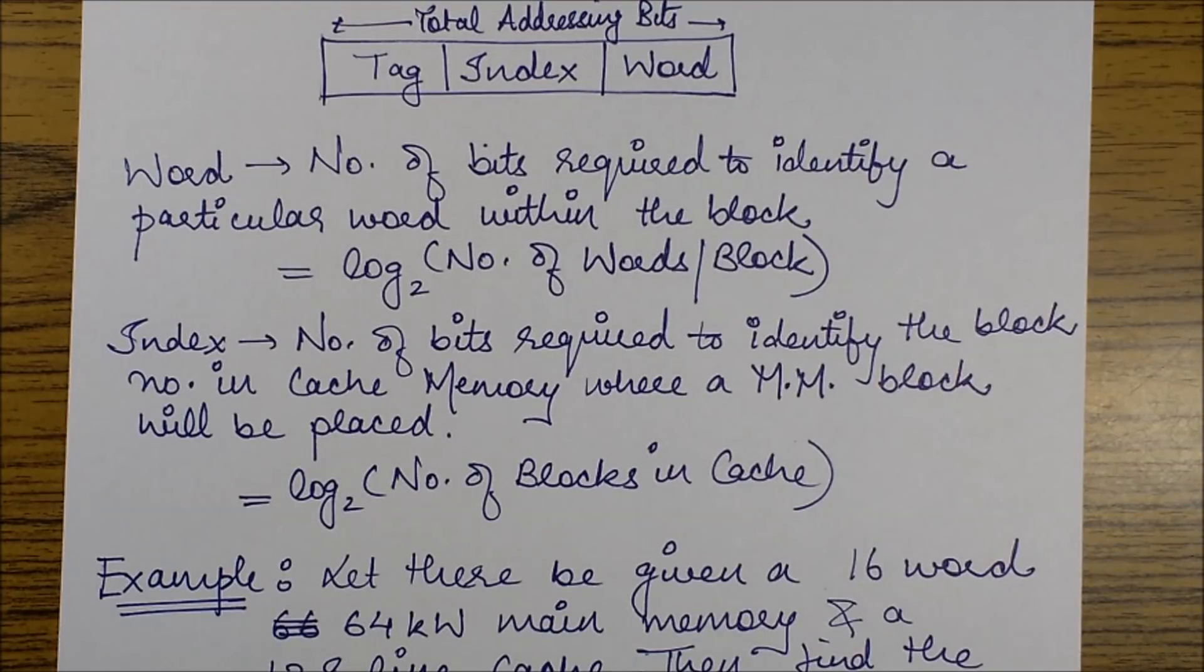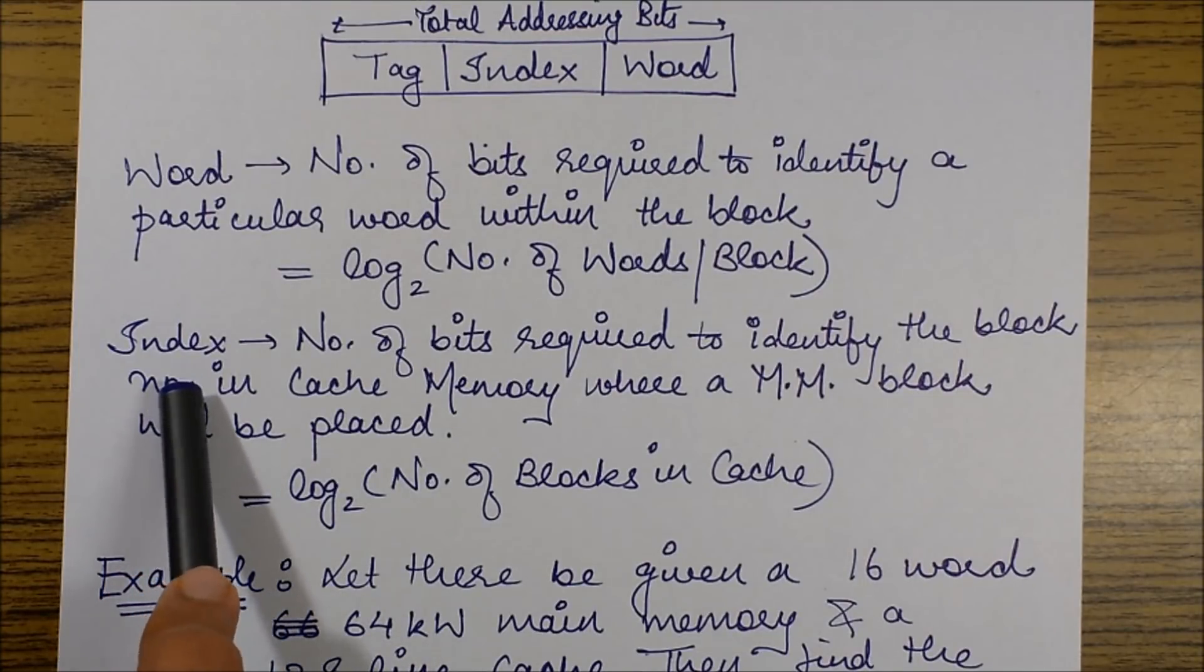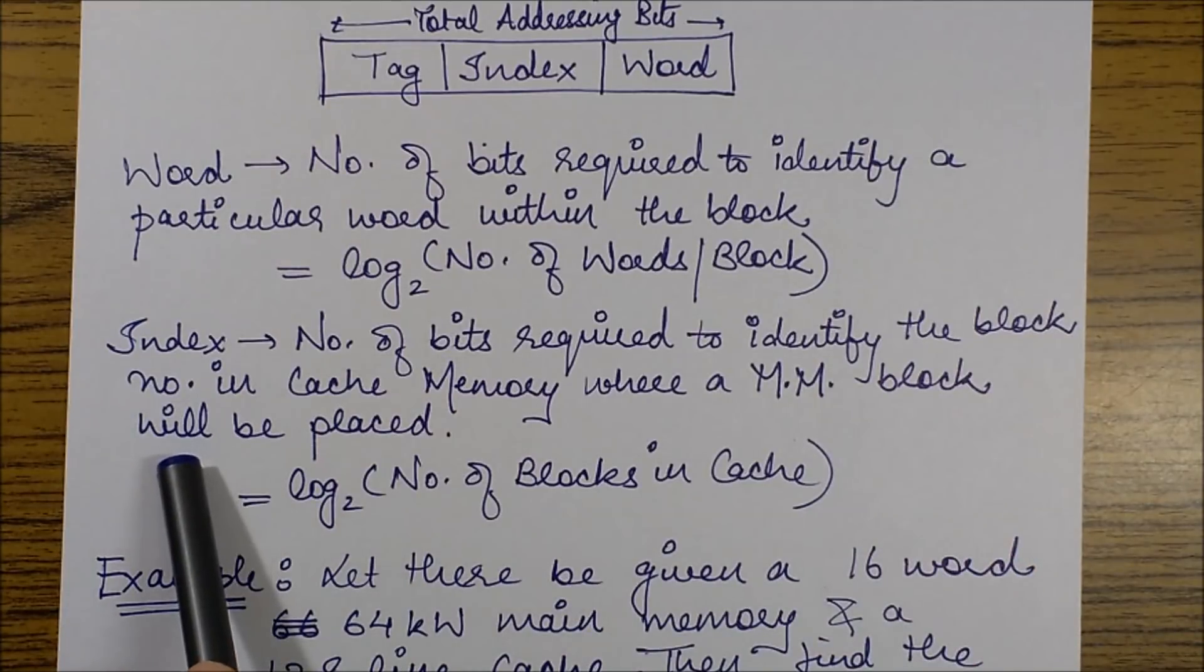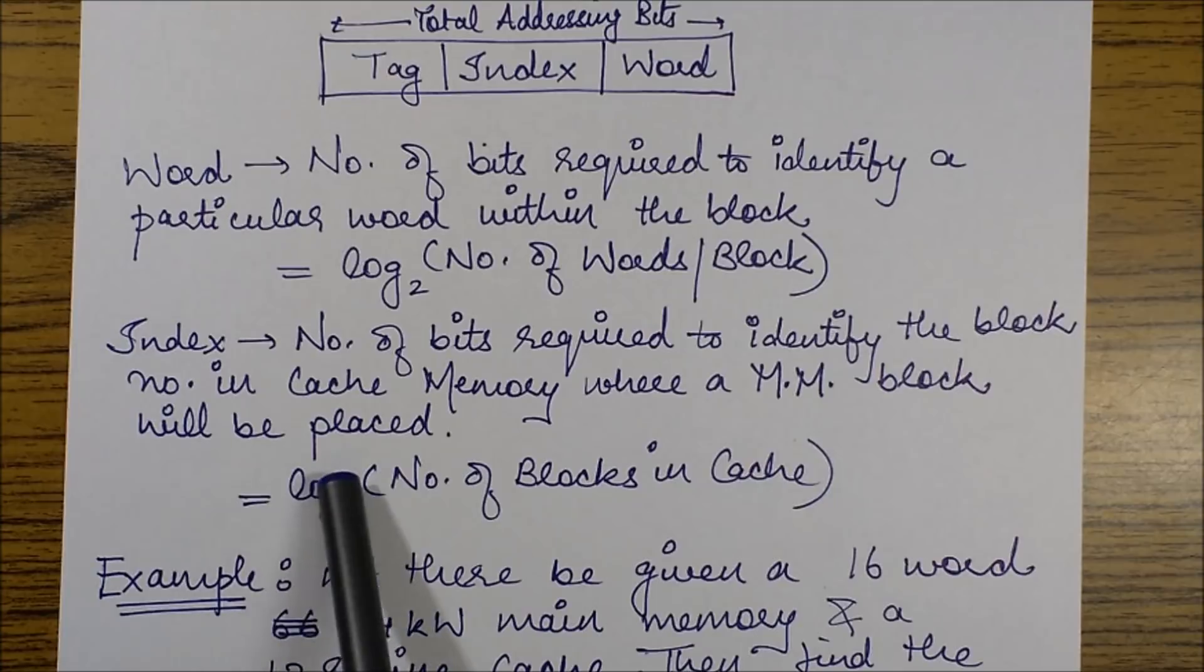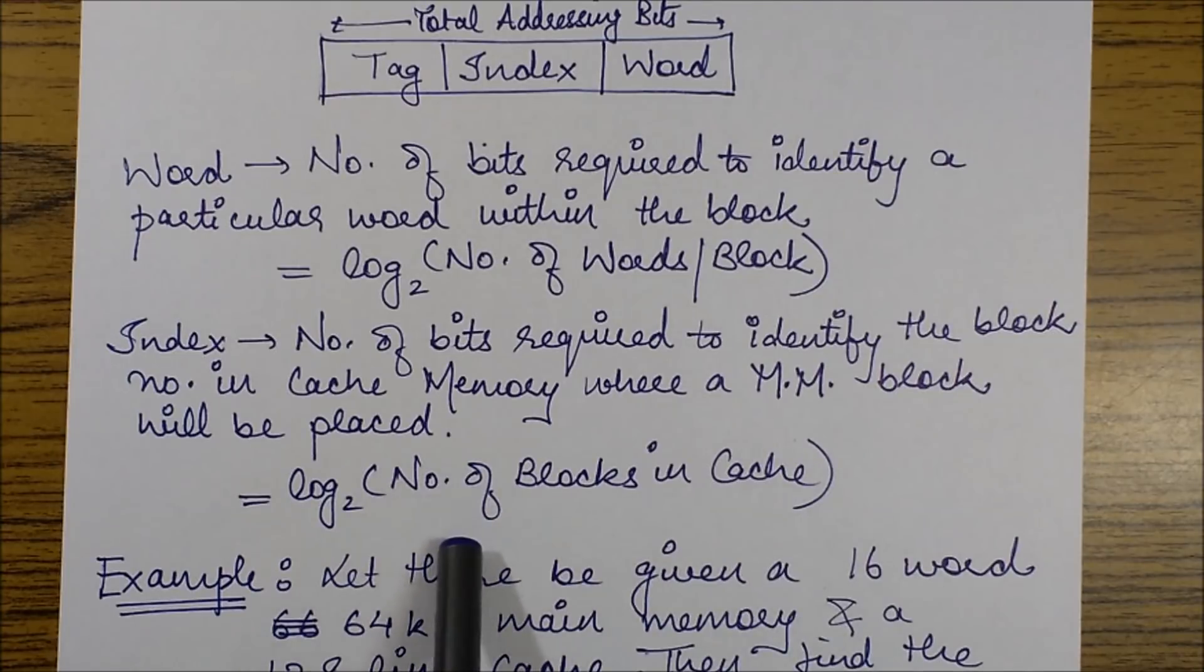Let's define what is an index. It is the number of bits required to identify the block number in cache memory where a main memory block will be placed. It is equivalent to log₂(number of blocks in cache). This represents the cache size in terms of number of blocks it contains.